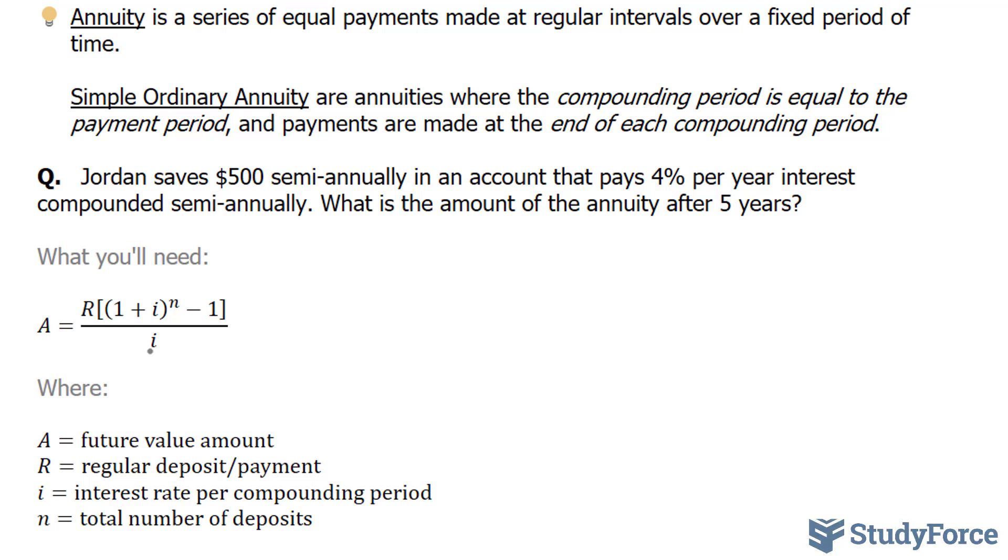So to tackle this question, let's highlight some key points. We are told Jordan will save $500 semi-annually in an account that pays 4% per year interest compounded semi-annually. So this 4% per year represents the whole year, but since he is saving $500 semi-annually, you'll have to take your interest of 4% and divide it by 2, because semi-annually means every 6 months.